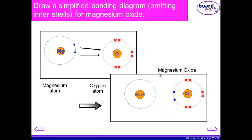Now here is the simplified version where we have just drawn the outer shell — magnesium with two in its outer shell and oxygen with six in its outer shell — showing the ions where the magnesium has lost the electrons and given them to the oxygen. Because the magnesium has a positive charge and the oxygen has a negative charge, they are attracted to one another and hence you form magnesium oxide.